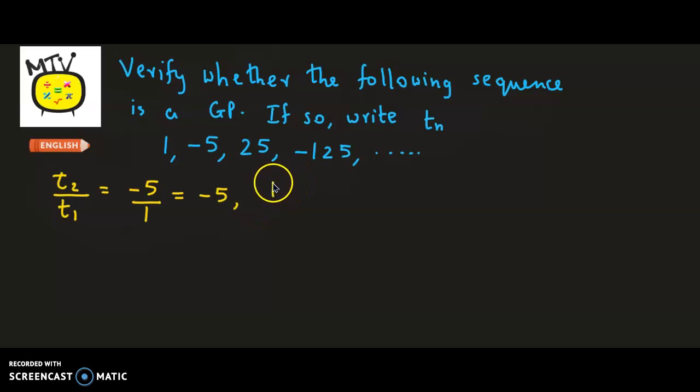Let's consider the ratio between the third and second term, that is T3 by T2. This is 25 divided by -5, so again we get the ratio as -5.